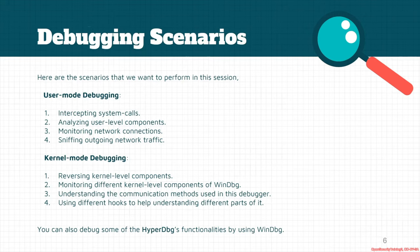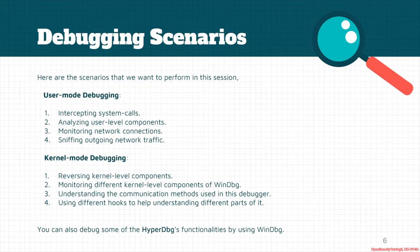For the debugging scenarios, the first scenario is a user-mode application. We will intercept its system calls, analyze user-level components, monitor network connections, and sniff outgoing network traffic. For the kernel-mode part, we will reverse the kernel-mode components of WinDbg and monitor different kernel-level components to understand the communication methods used in that debugger.